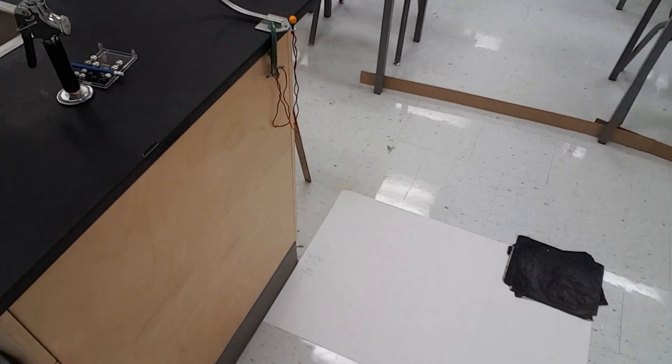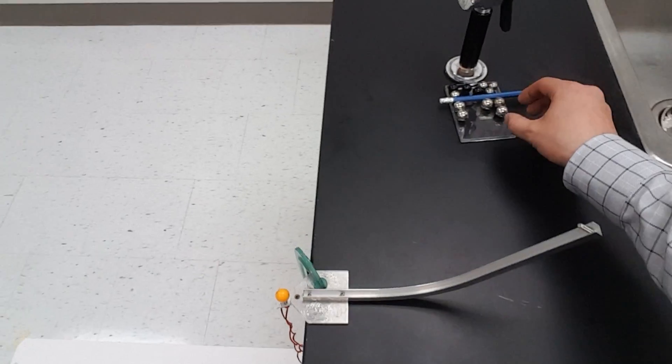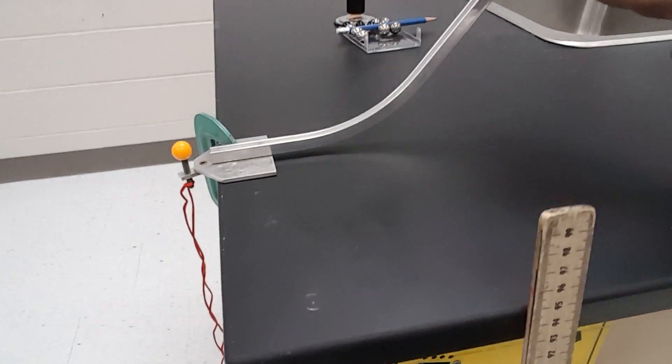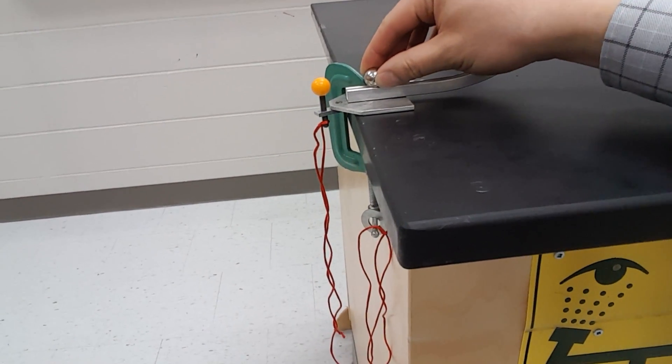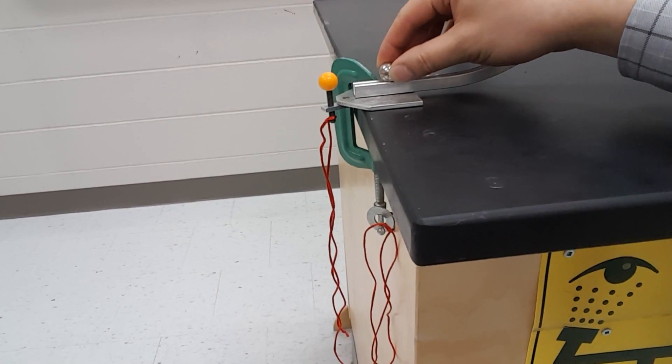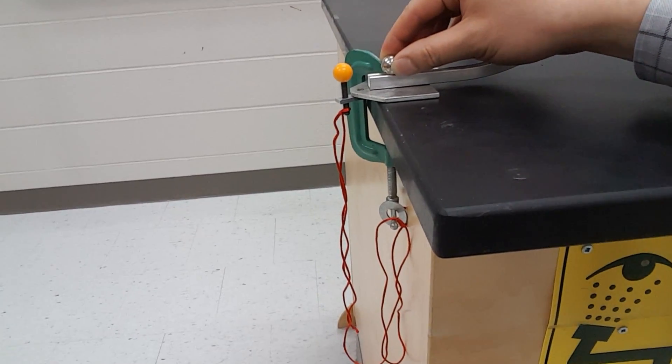Instead we'll be using this contraption right over here. If you observe this contraption carefully you'll notice that I am able to allow a ball to roll down this ramp and eventually that ball will level itself off ensuring that the horizontal velocity is measurable and the vertical velocity is at zero.